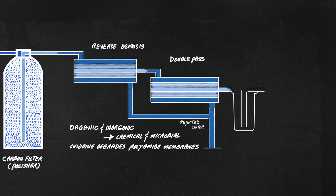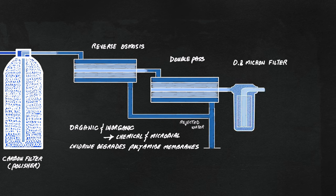RO performance is monitored by percentage of rejection and water conductivity in a continuous manner. 0.2 micron filters, also known as sterile filters, are often used in the purification process.